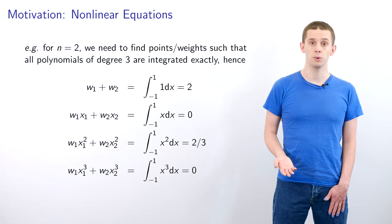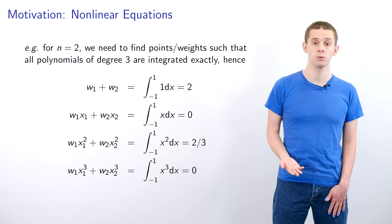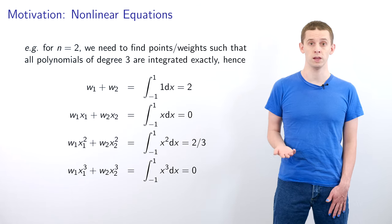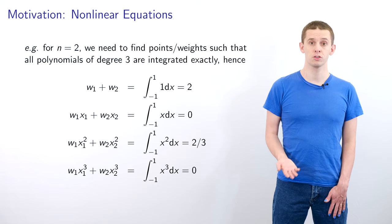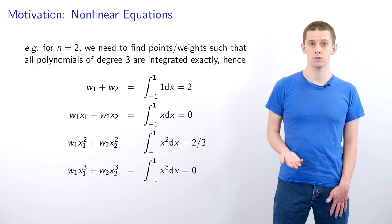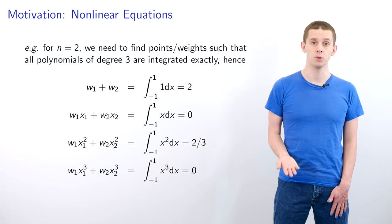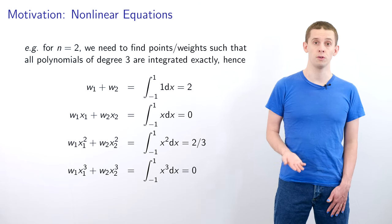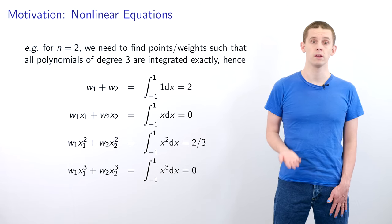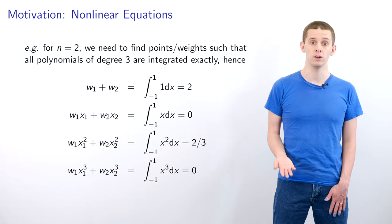However, we could also try and find these points and weights directly via solving a linear system of equations for the xi and the wi. For example, if we look at n equal 2 then we want to find points and weights that will integrate polynomials up to degree 3 exactly. So therefore our quadrature scheme should integrate the monomials 1, x, x squared and x cubed exactly. And if we consider each one of these monomials then it will give us a non-linear equation for the xi and wi that needs to be satisfied. And we would therefore have four non-linear equations to solve for these four unknowns.